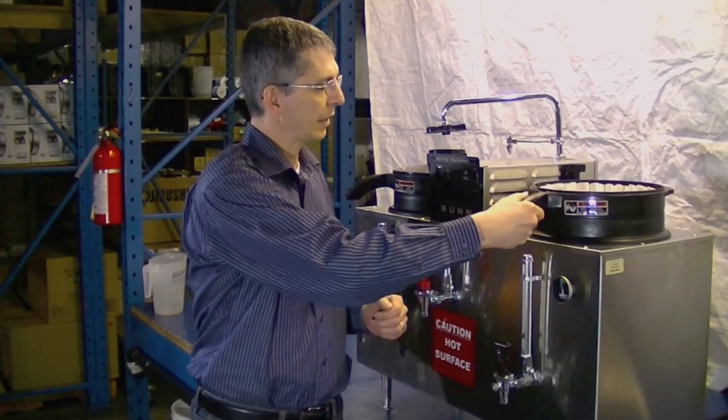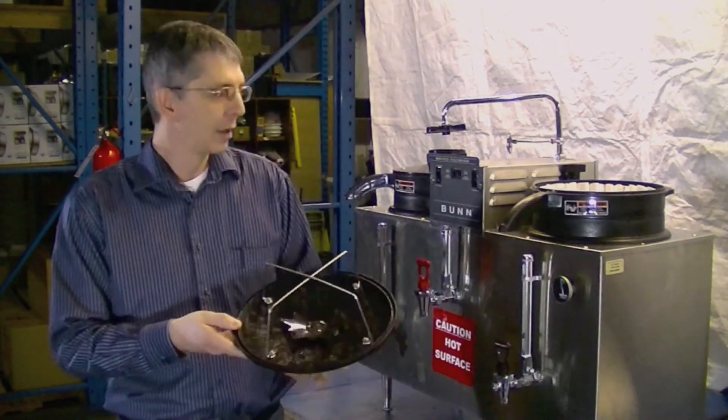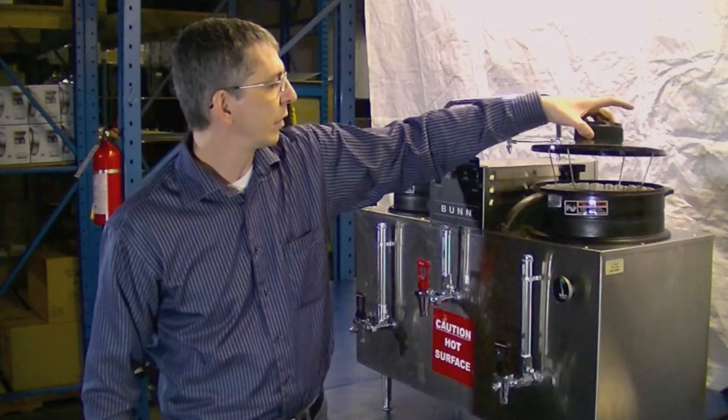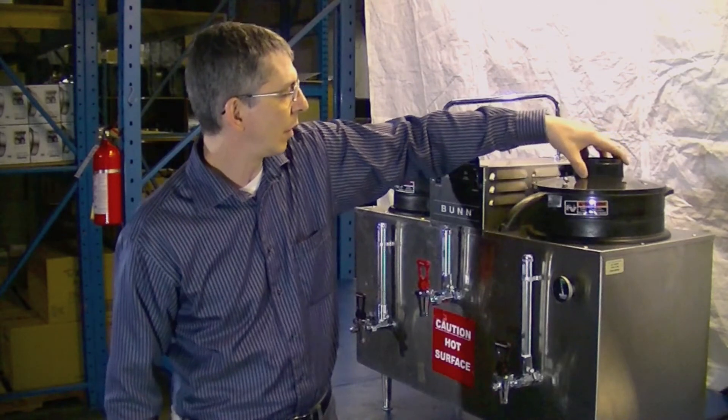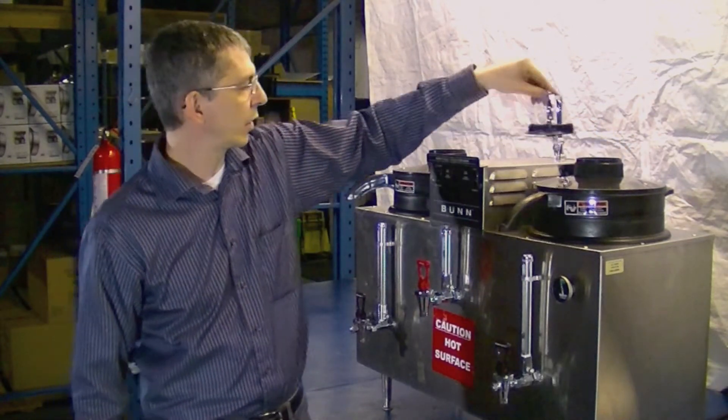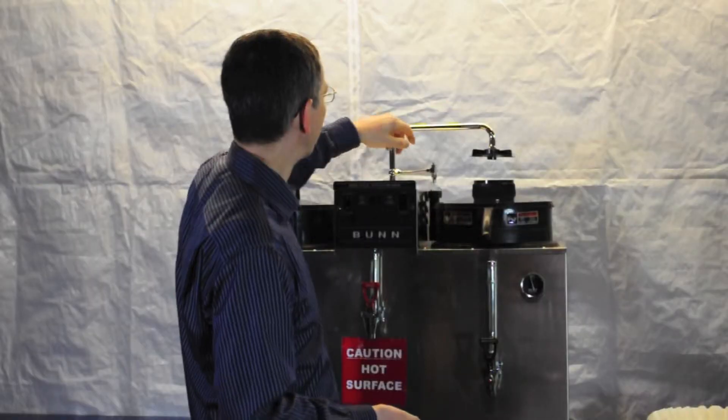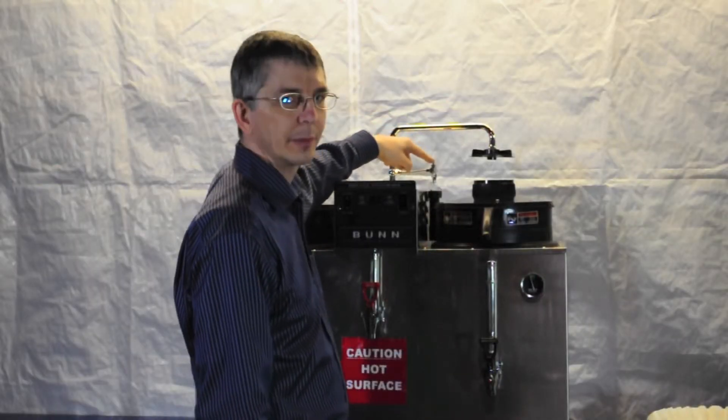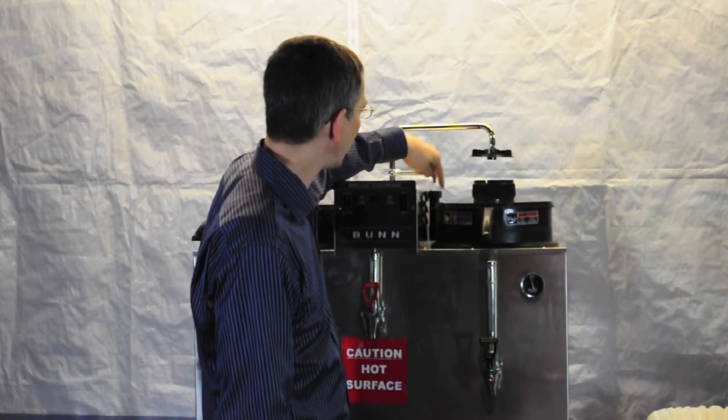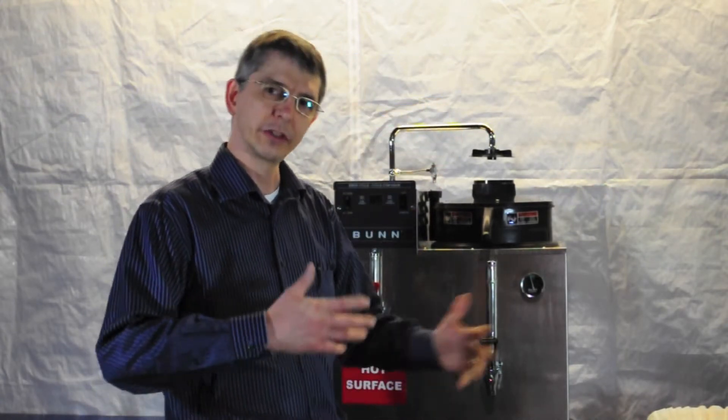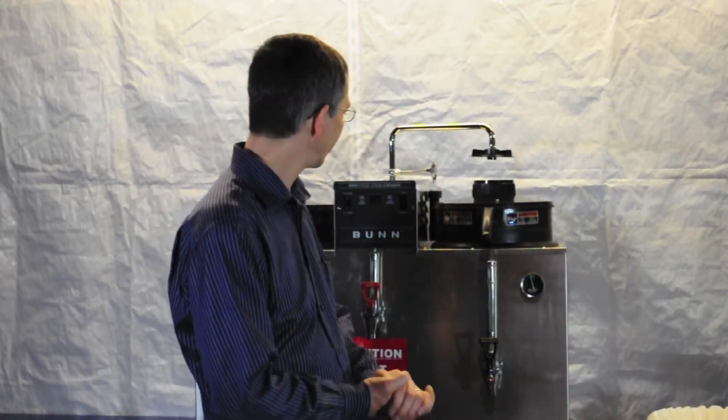Set the funnel back in the funnel support, put the funnel lid on the funnel, take your brew swing arm and center it over the top of your funnel lid. Make sure that your bypass is centered over your bypass funnel on your support so you don't have water running all over the place burning anybody.